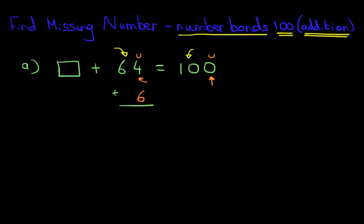We can even do this. 64 plus six. Four plus six is 10. We carry one over, and six plus one is seven. So we're now up to 70.